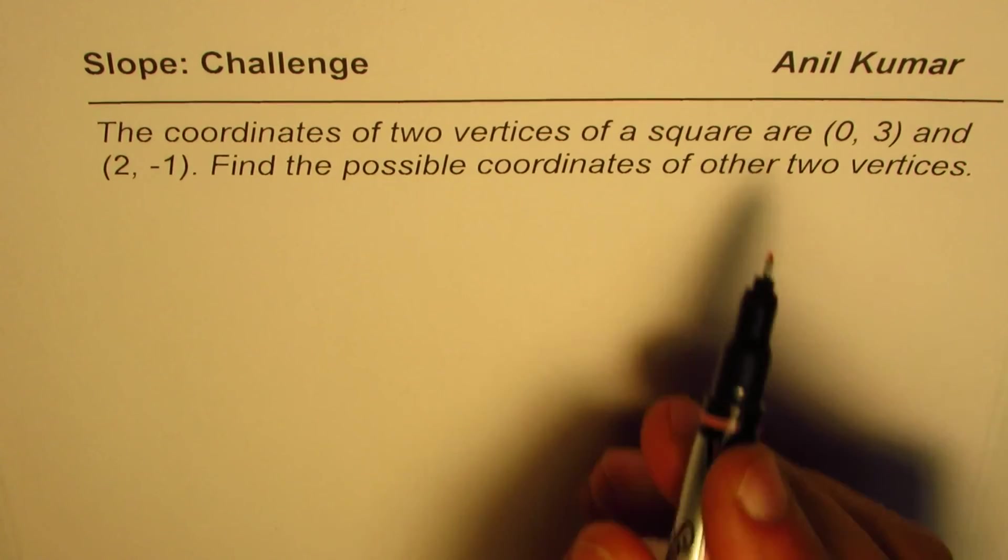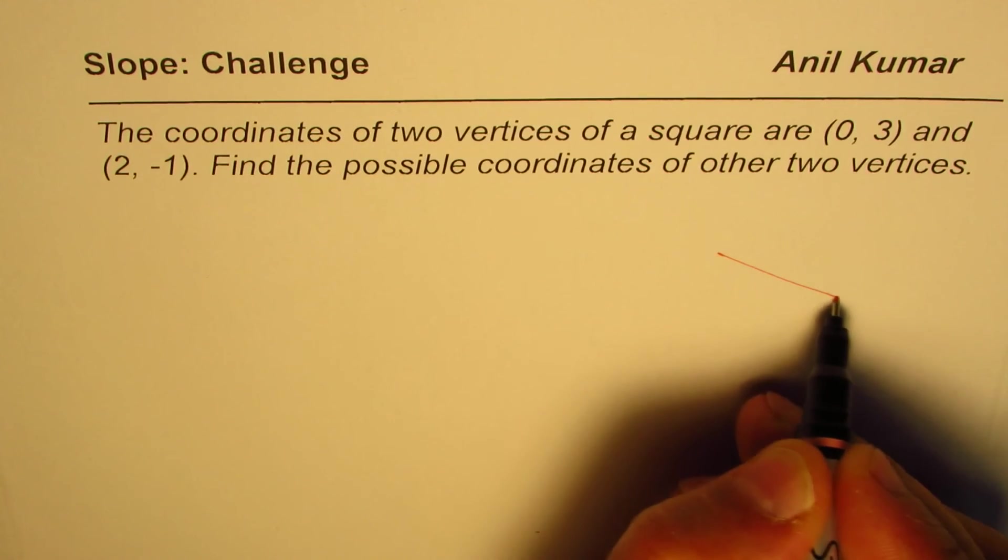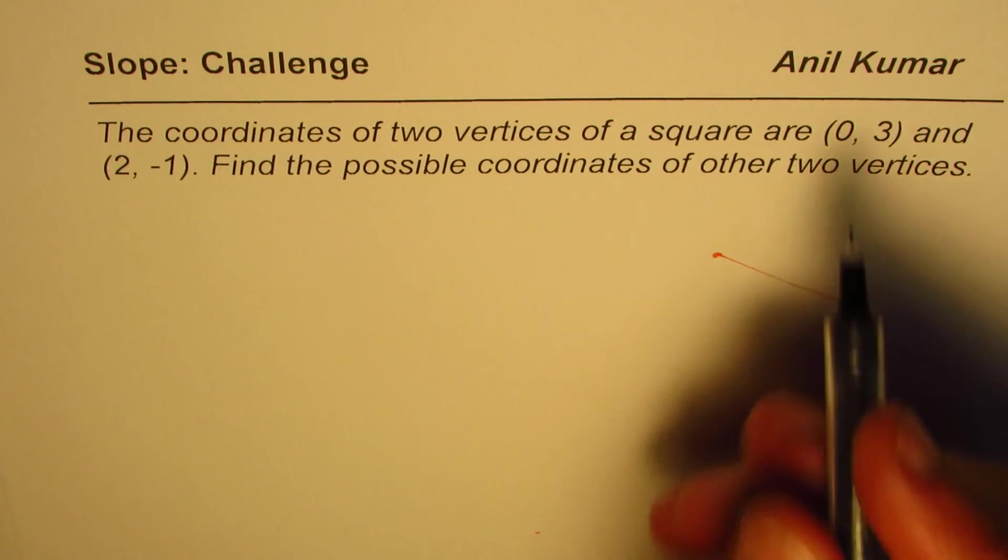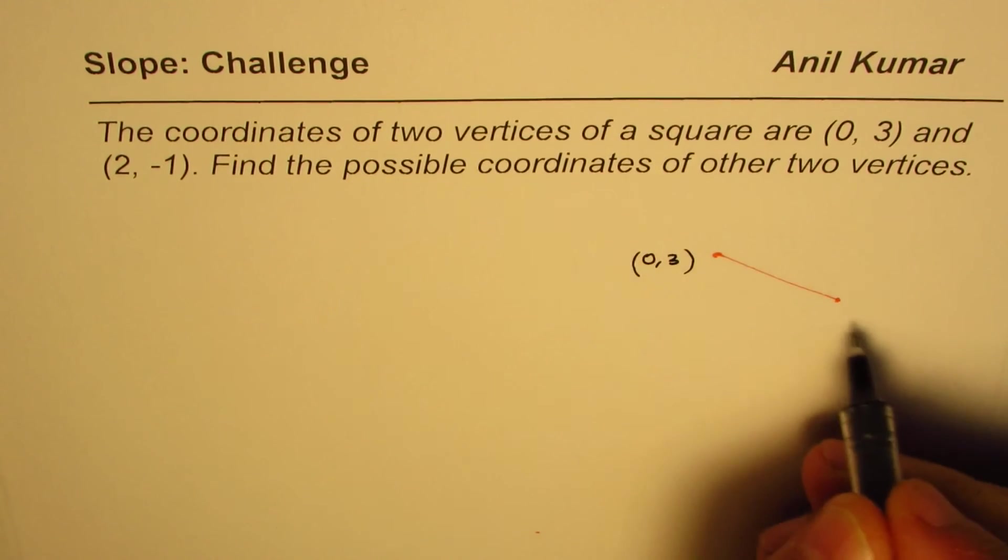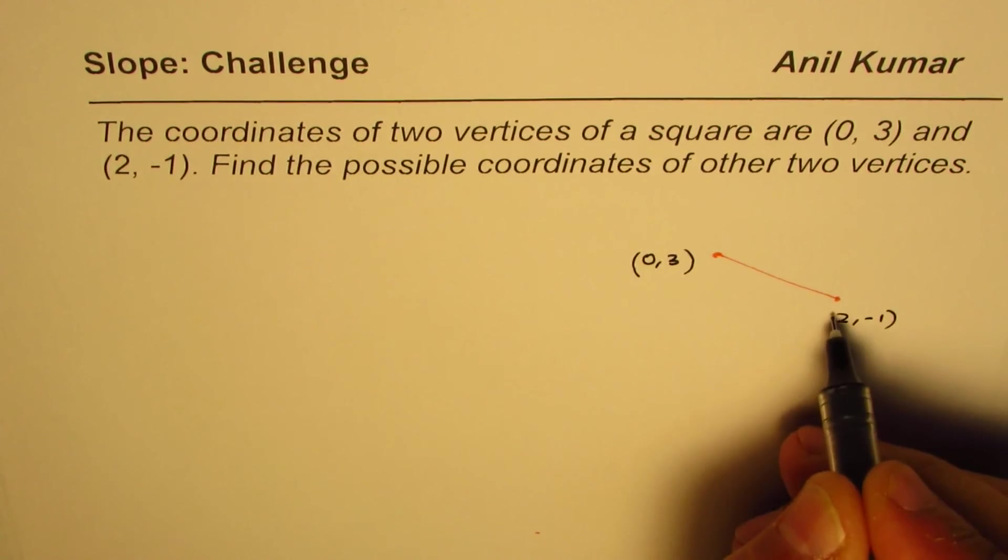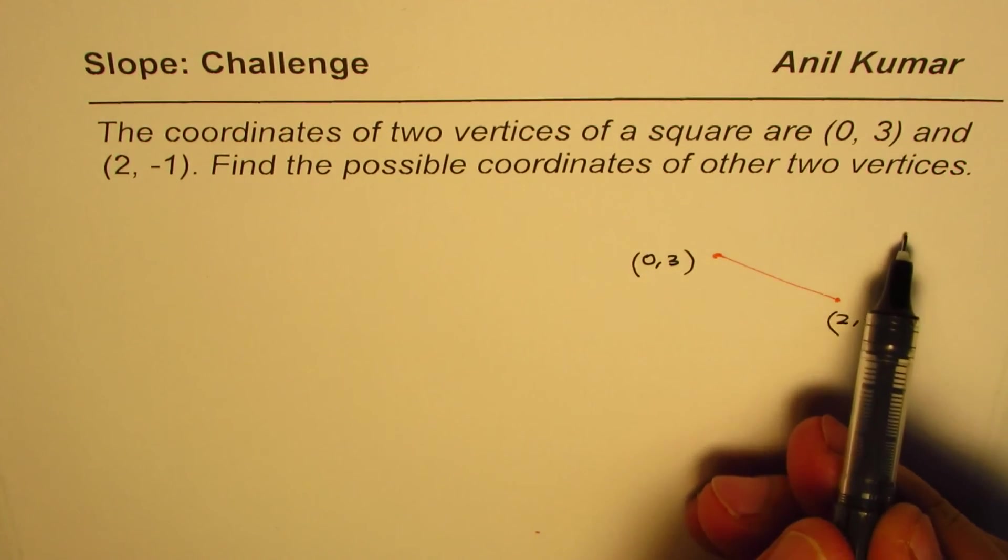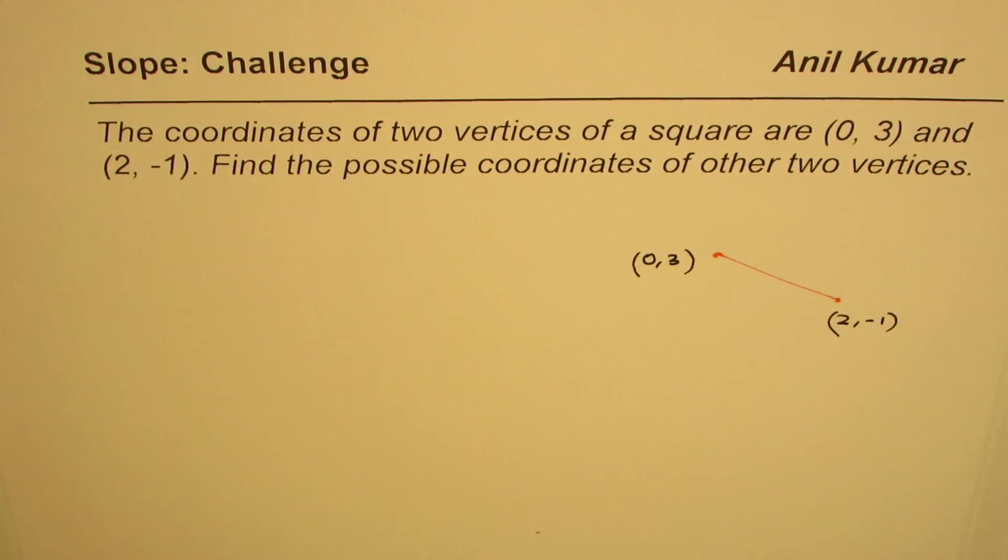We are working with squares and we are given two coordinate points. Let me label them as (0, 3) and (2, -1). We need to find the other two coordinates which will make a square with this given side. You can pause the video, answer the question, and then look into my solution.